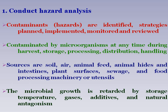The first principle is to conduct hazard analysis. Contaminants are identified, and strategies are planned, implemented, monitored, and reviewed periodically. Food contamination is caused by microorganisms at any time during harvest, storage, processing, distribution, or handling. Primary sources of microbial contamination are soil, air, animal feed, animal hides, plant surfaces, and food processing machinery and utensils. Microbial growth is retarded by storage temperature, gases, additives, and natural antagonism.